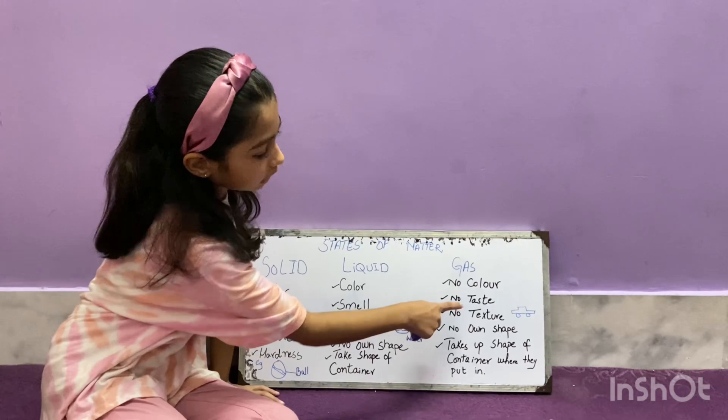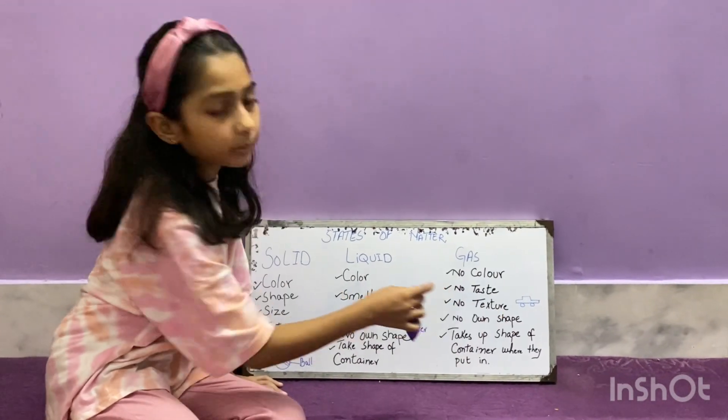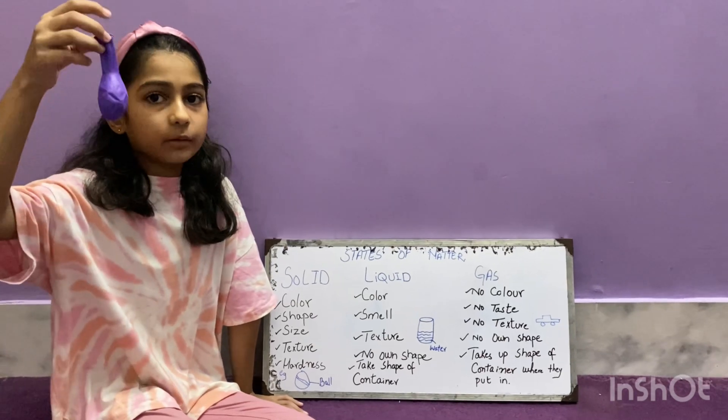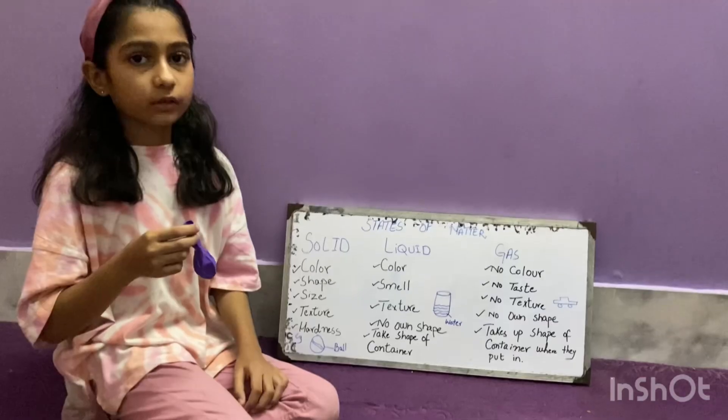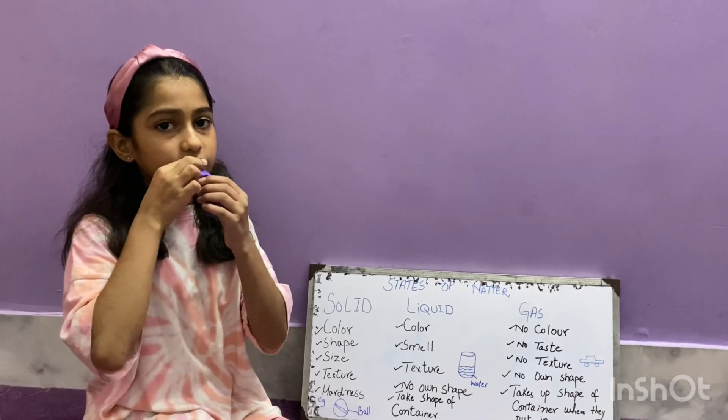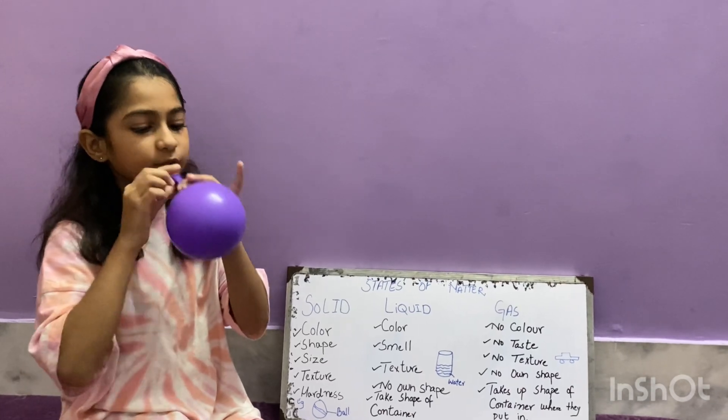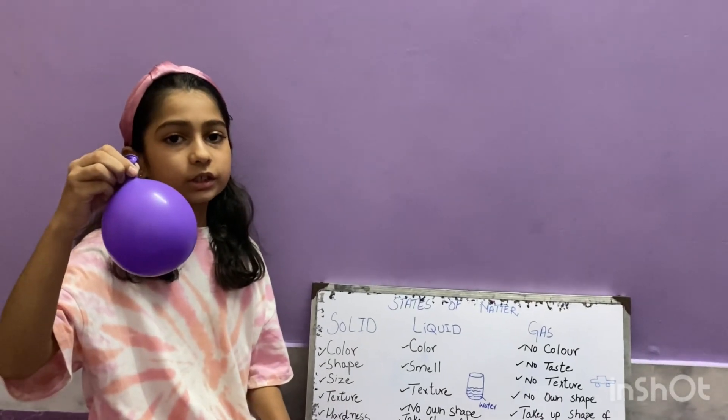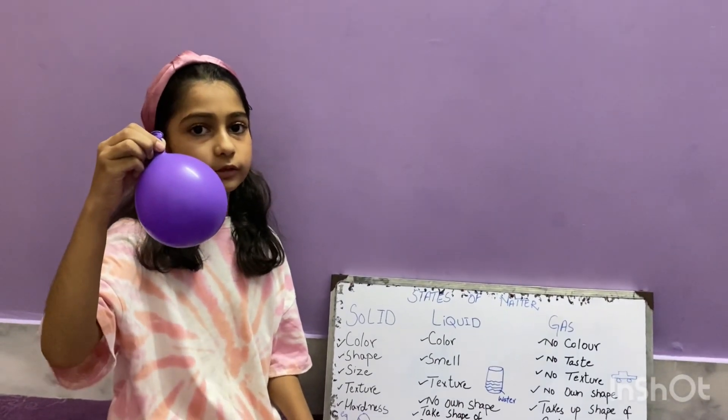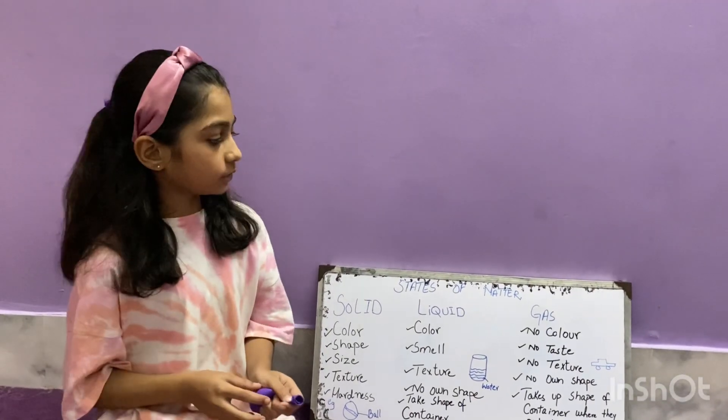Oxygen has no color, no taste, no texture, no own shape. I have a balloon. I am going to fill balloon with oxygen. Oxygen takes shape of balloon. I am going to release the balloon. It has no color, no texture.